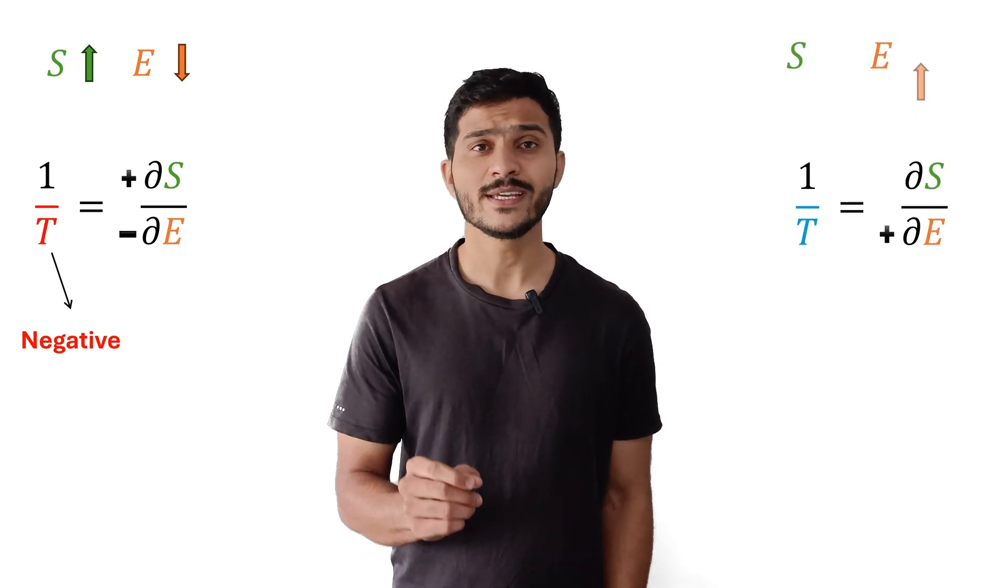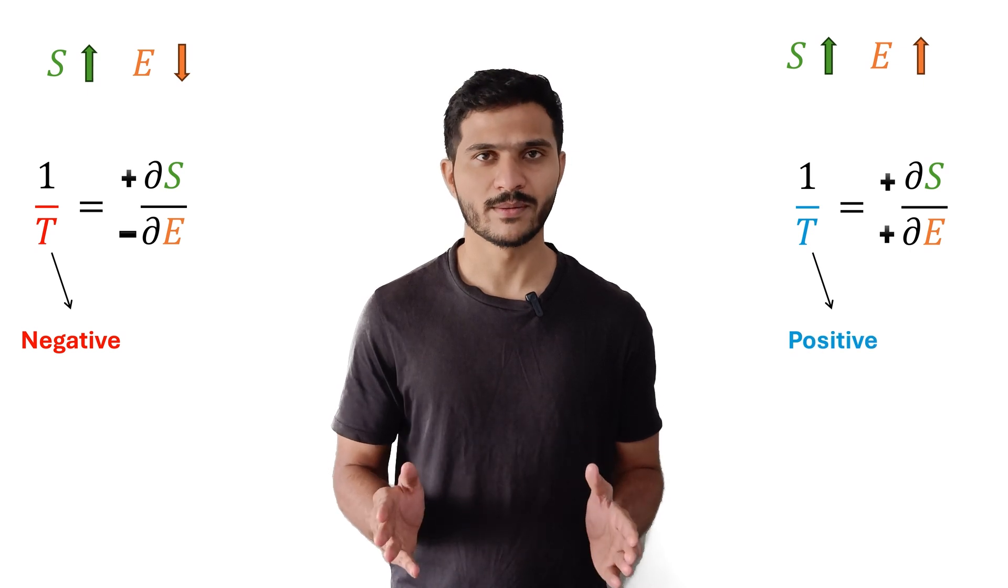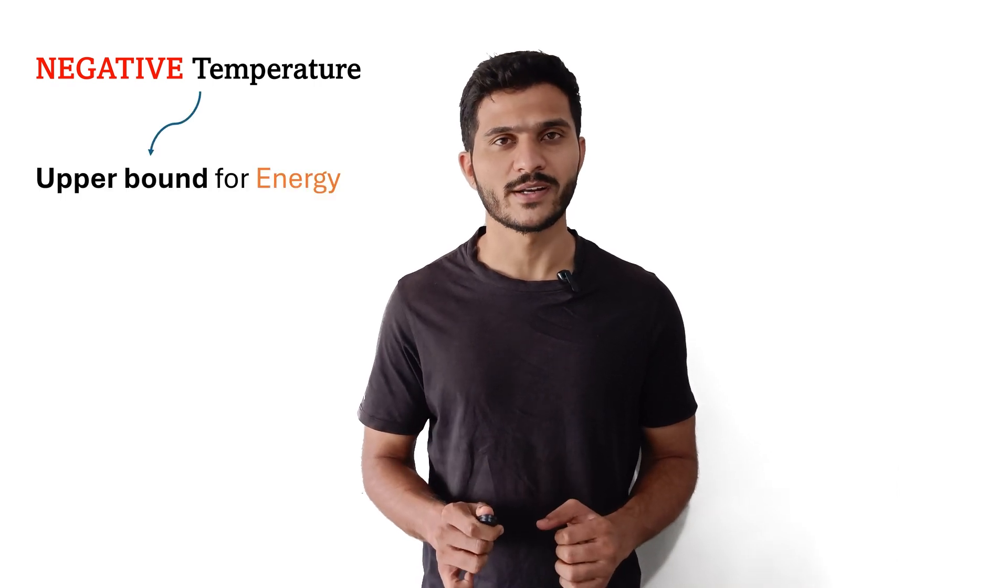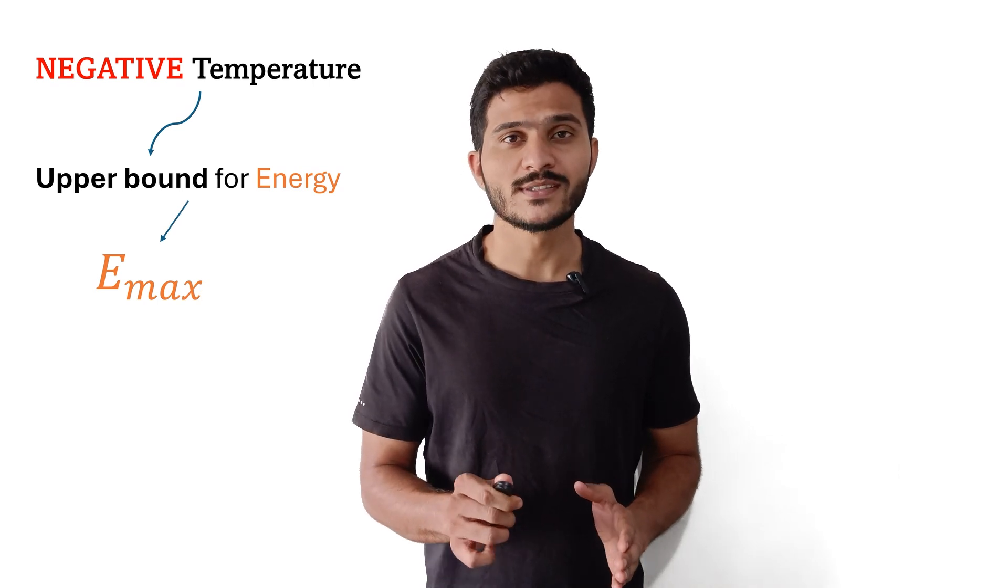On the other hand, if we increase energy of the system, the entropy increases for positive temperatures. In order to be able to reach negative temperatures, the system needs to possess an upper bound for the energy of its particles, that is the maximal possible energy a particle of a system can have.